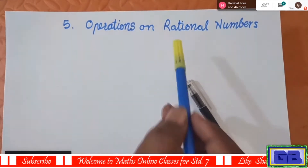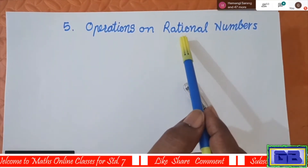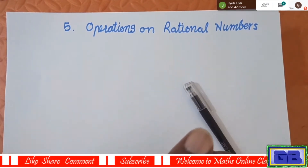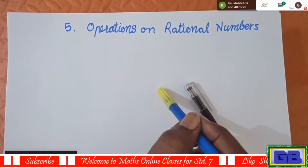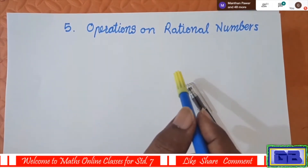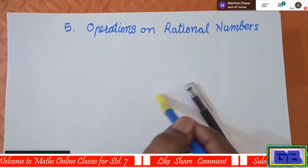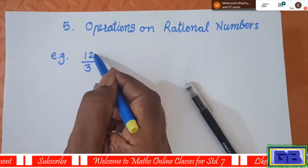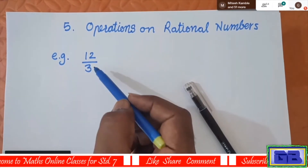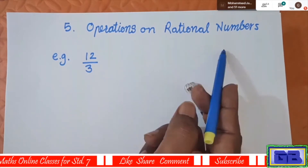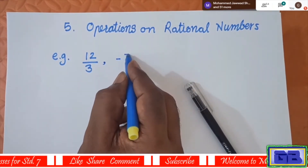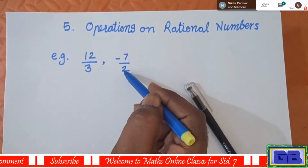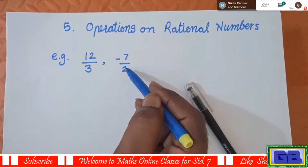Rational numbers means just a fraction which has a numerator and denominator. The only condition is the denominator should not be zero. Any other number can be there, and that fraction is called a rational number. For example, 12 upon 3 has a numerator and a denominator — this is a rational number. Another example: negative 7 upon 2, here numerator and denominator do not include zero.